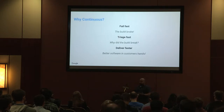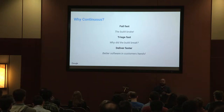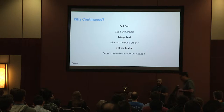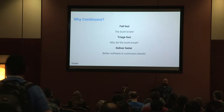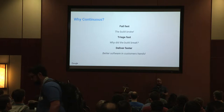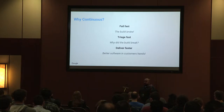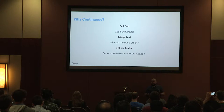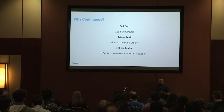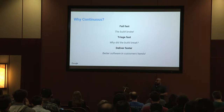Why do we care about doing stuff in a continuous manner? You want to fail fast — you want to know the build broke as quickly as possible, just like you'd do unit testing locally for immediate feedback. You want to triage fast, figure out why the build broke, tap someone on the shoulder or yell at them over Slack. Ultimately, you want to get your software out faster into your users' hands, as qualitatively good as possible, fully tested.